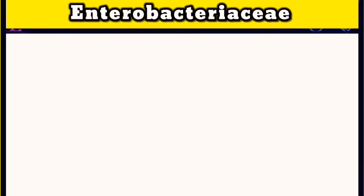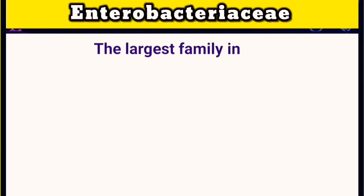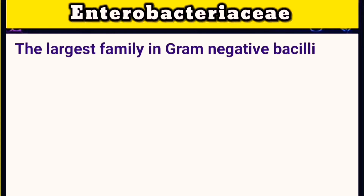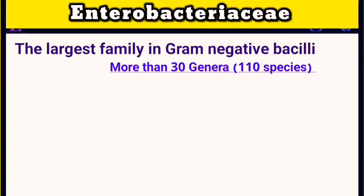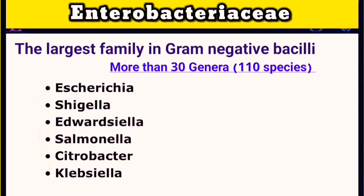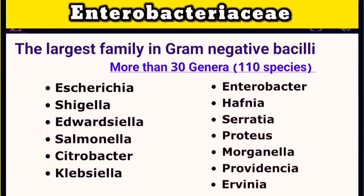Enterobacteriaceae is an important family because it includes more than 30 genera and more than 110 species. It is also medically important, containing well-known bacteria such as E. coli, Klebsiella, Enterobacter, Salmonella, Shigella, and Proteus.